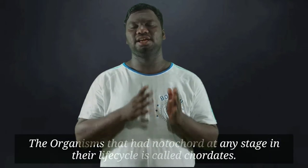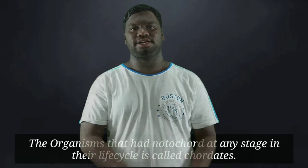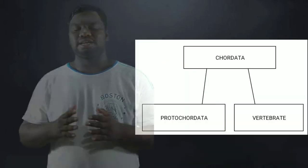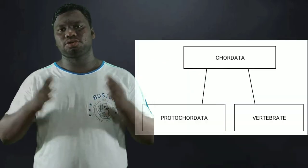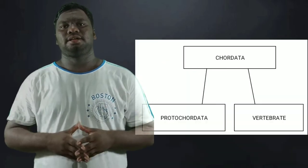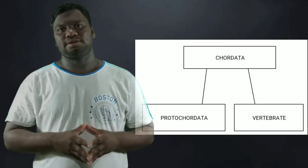The organisms that have a notochord in their life cycle at any stage are called Chordata. Chordata is divided into two groups: one is Proto-chordata, and the other is Vertebrata.